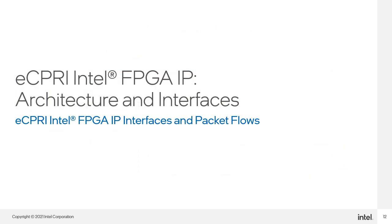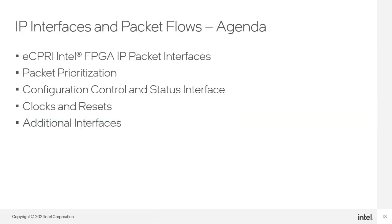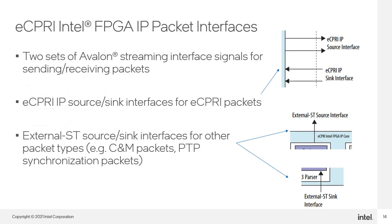Now that you're familiar with the blocks inside the IP core, let's take a look at the interfaces and how the messages and packets flow through the IP core. We'll start with the packet interfaces to the IP and then look at how the packets are prioritized during routing. We'll then take a quick look at the CSR interface and the IP's required clocks and resets. The IP core has two source and sync interfaces for sending and receiving packets, including eCPRI message packets, synchronization packets, and other frame types such as Ethernet or IPv4.